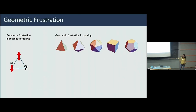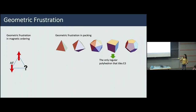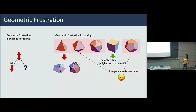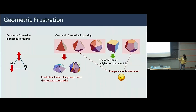Consider the five regular polyhedra. Only the cube can tile Euclidean 3D space with no frustration — giving 100% packing fraction and perfect periodicity. All other shapes are geometrically frustrated. Take the tetrahedron: five of them almost form a ring but leave a small gap; twenty of them almost form an icosahedron but again leave little gaps. Our hypothesis is that this frustration hinders long-range order in self-assembly problems and gives rise to a controllable structural complexity that generates interesting assembled clusters.